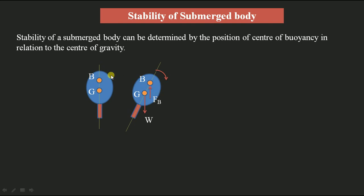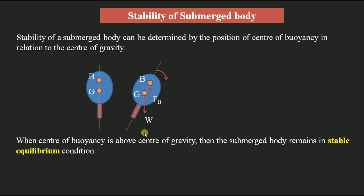This condition — where the couple acts in anti-clockwise direction opposing the tilt — occurs when the center of buoyancy is above the center of gravity. So the statement is: when the center of buoyancy is above the center of gravity, the submerged body remains in stable equilibrium condition. The couple automatically makes the body return to its original position.